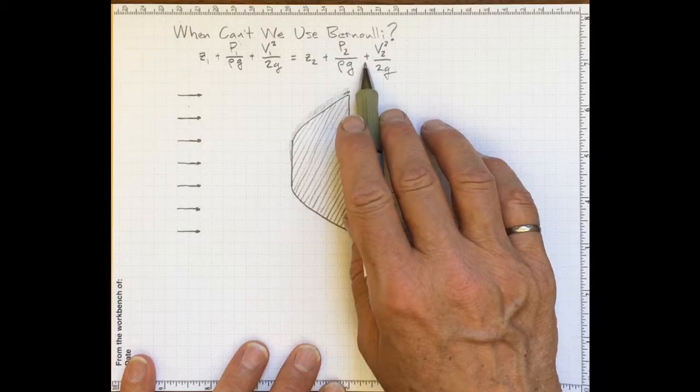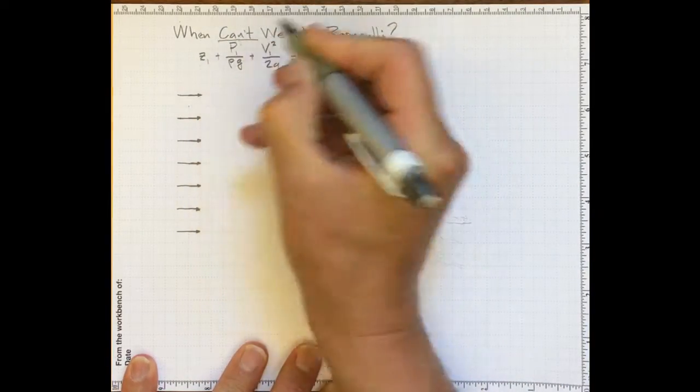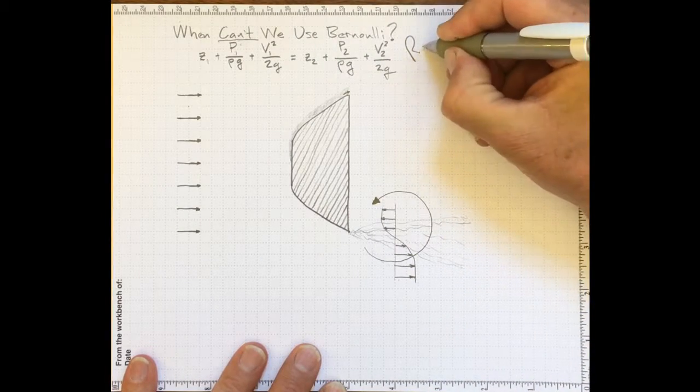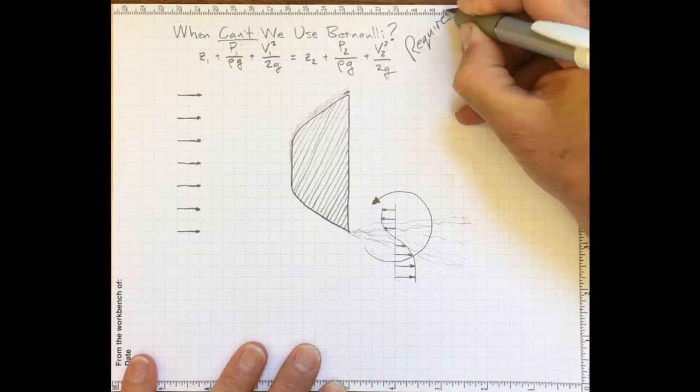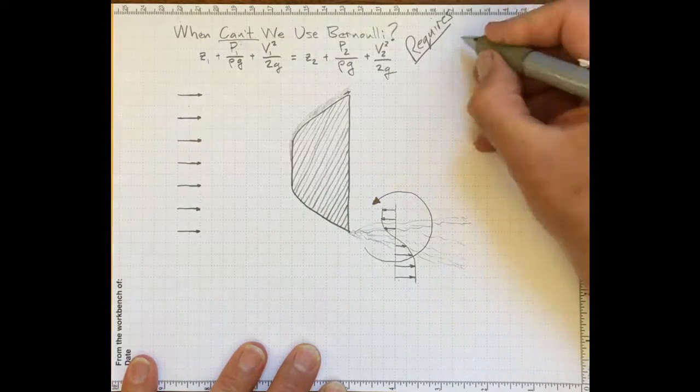We derived Bernoulli's equation. Now the question is, when can we use it and when can't we use it? Bernoulli's equation has some requirements. You can only apply Bernoulli's equation on a streamline,